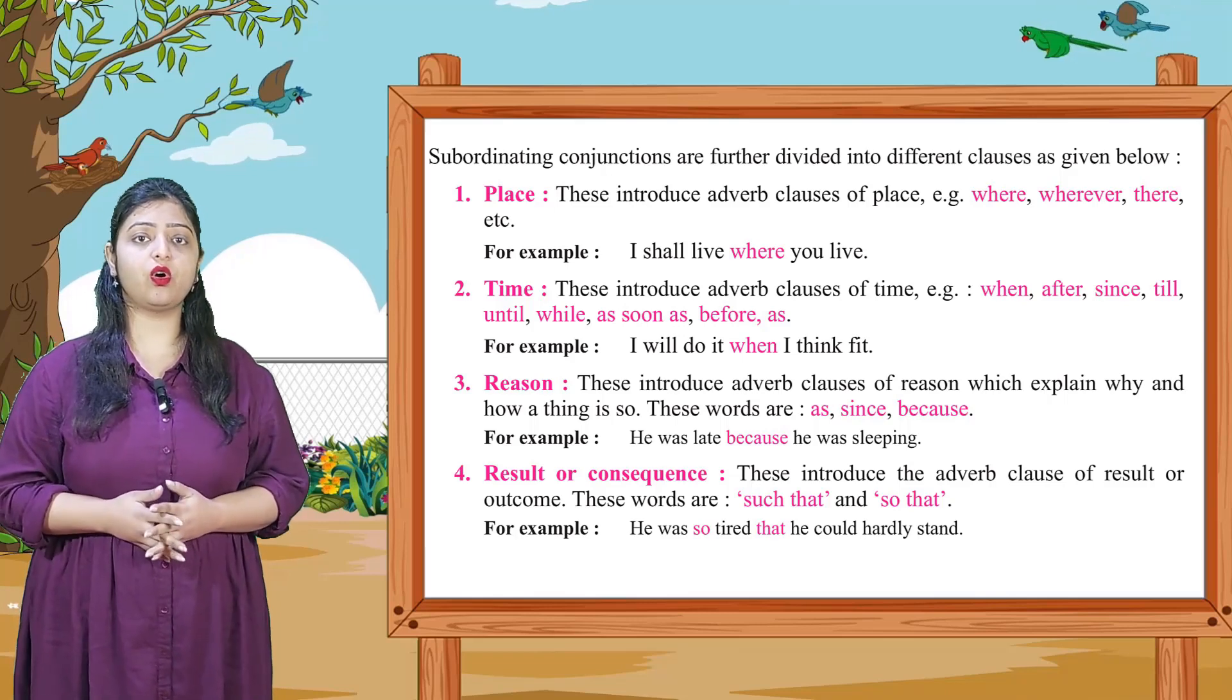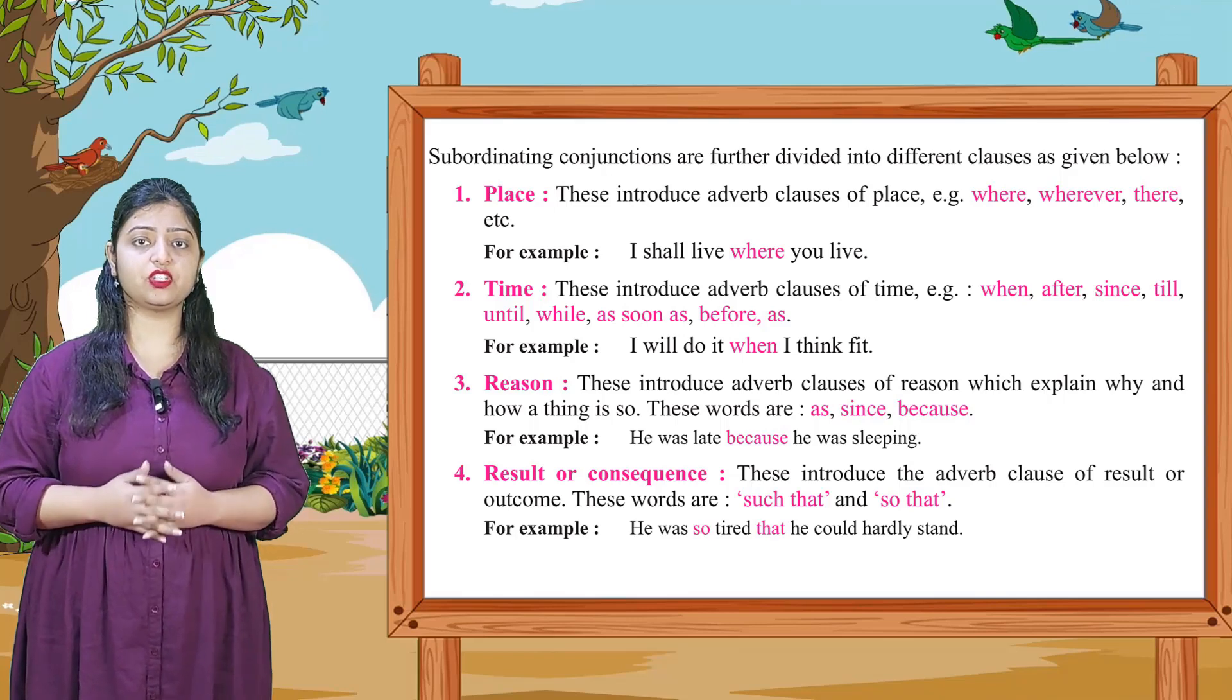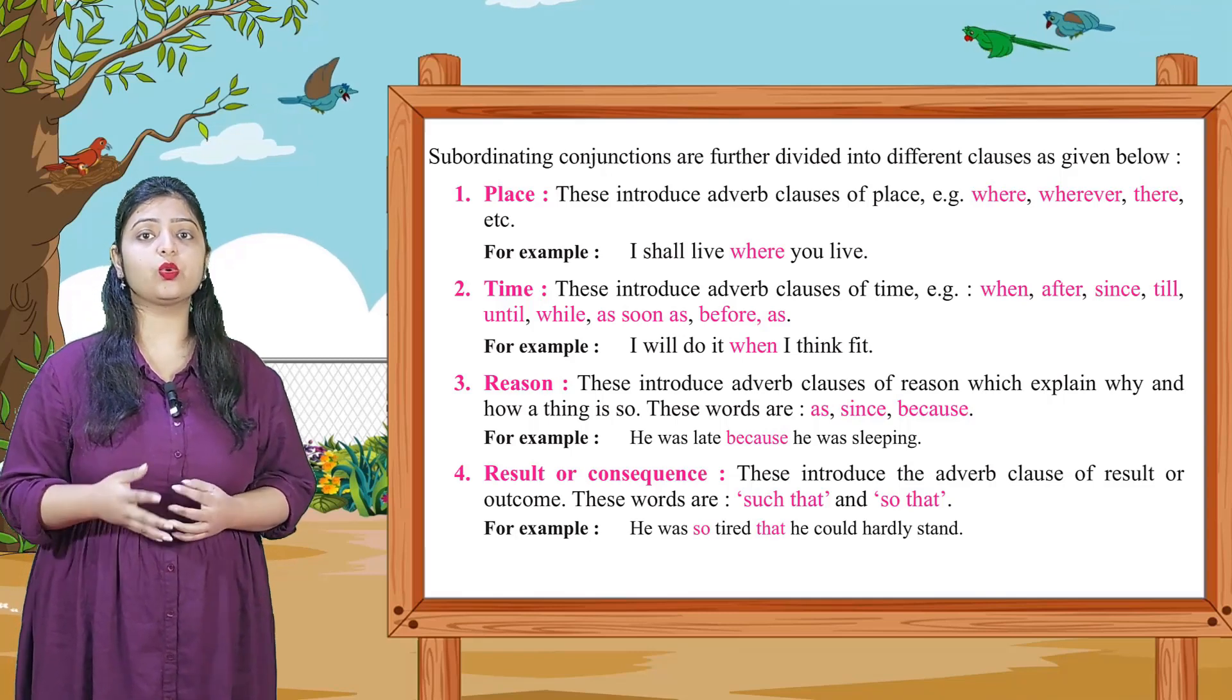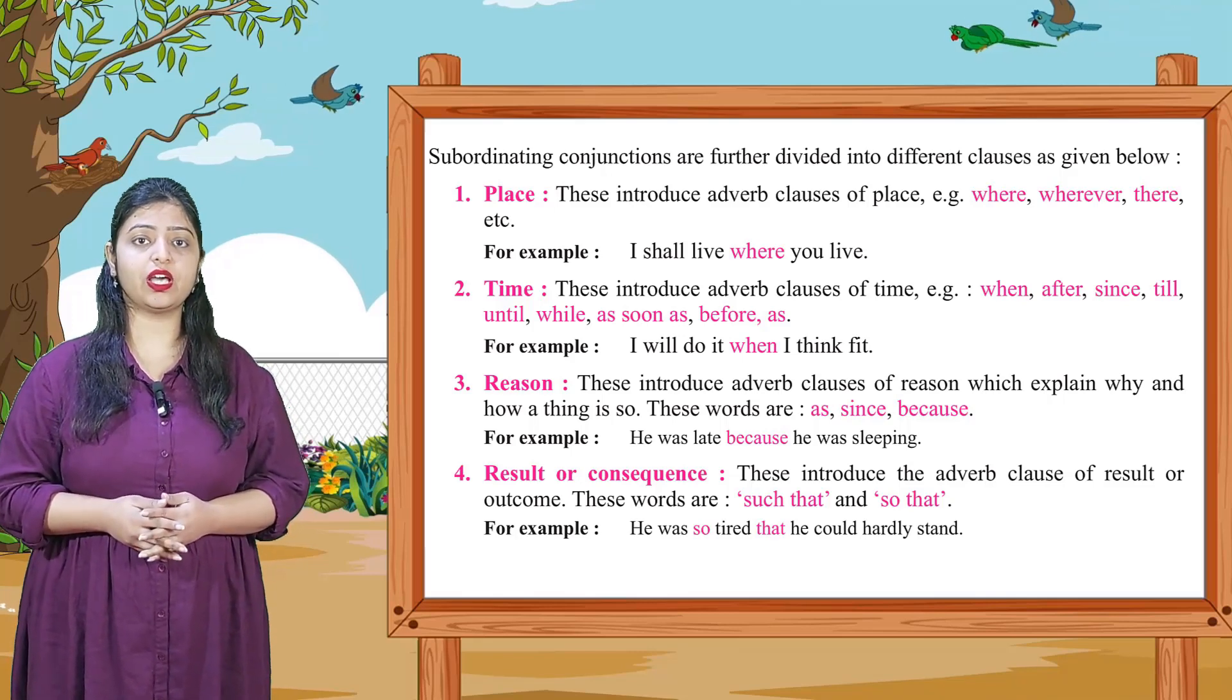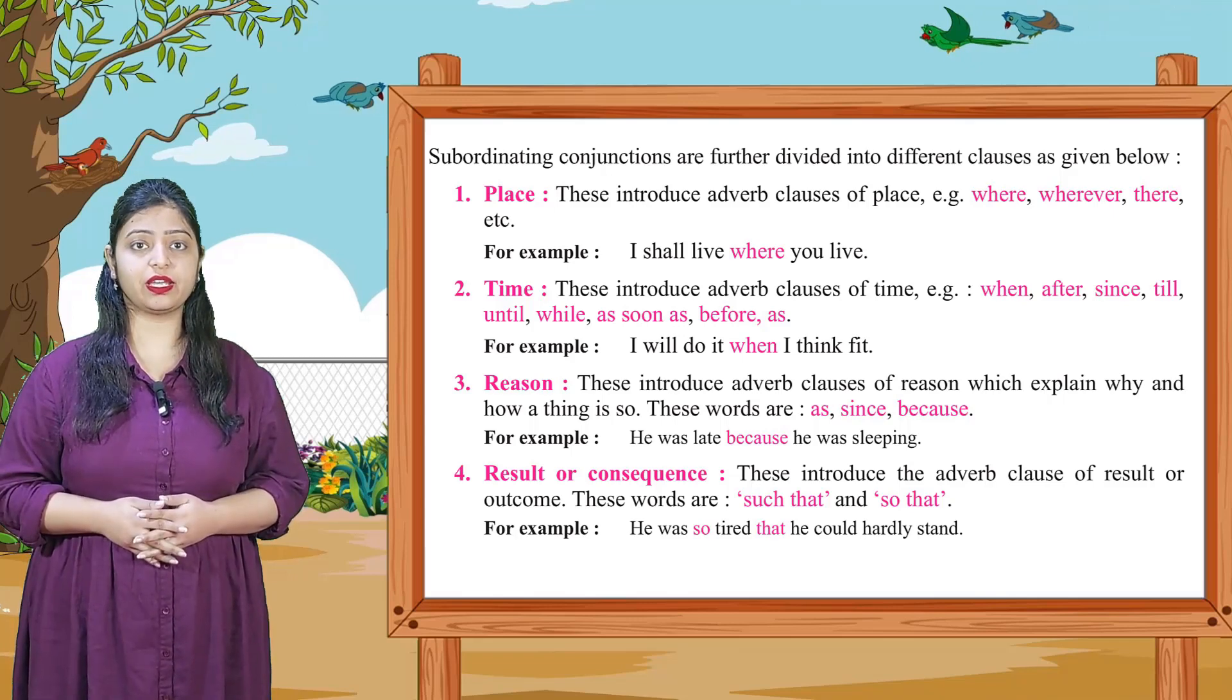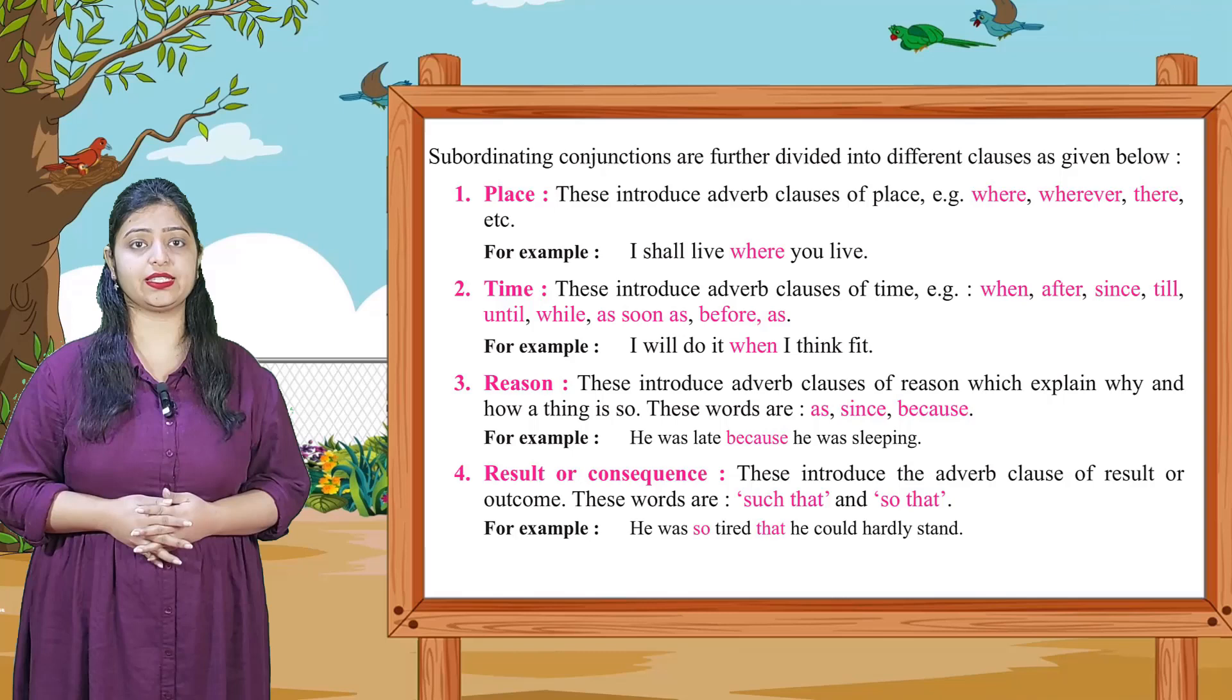Fourth, result or consequence. These introduce the adverb clause of result or outcome. These words are such that or so that. These subordinating conjunctions help us understand some kind of result or consequence. Examples: He was so tired that he could hardly stand. Here we used so and that. We also use so that together, like He was sleeping so that he could rest. Another example. In this manner we can see result or consequence.